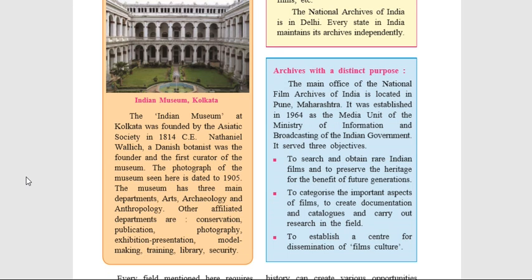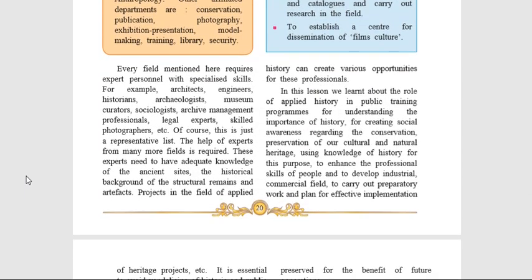All these fields require expert personnel with specialized skills. They are: first, experts like historians, archaeologists, sociologists, legal experts, etc. The second category — technicians like engineers, architects, skilled photographers, etc. And third, museum curators and archive management professionals. These experts need to have adequate knowledge of the ancient sites, historical background of the structural remains and artifacts. Projects in the field of applied history can create various opportunities for these professionals.